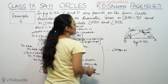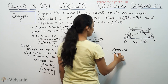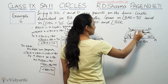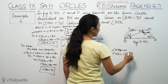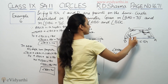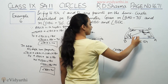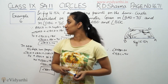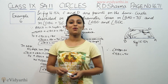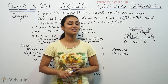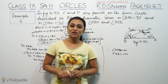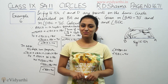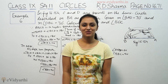And we have BDC. BDC equals 40 degrees. So this was example number 6 from exercise 16.7 of R.D. Sharma. Do watch the next video for more questions. Goodbye.